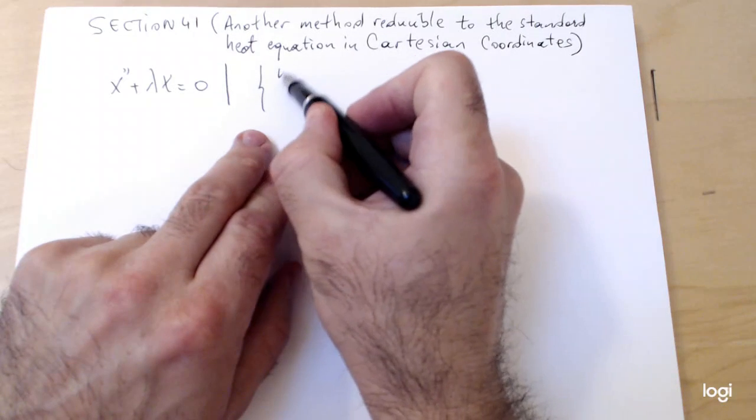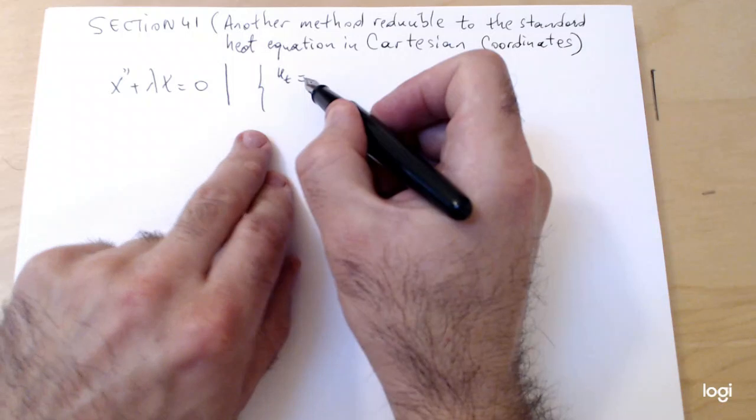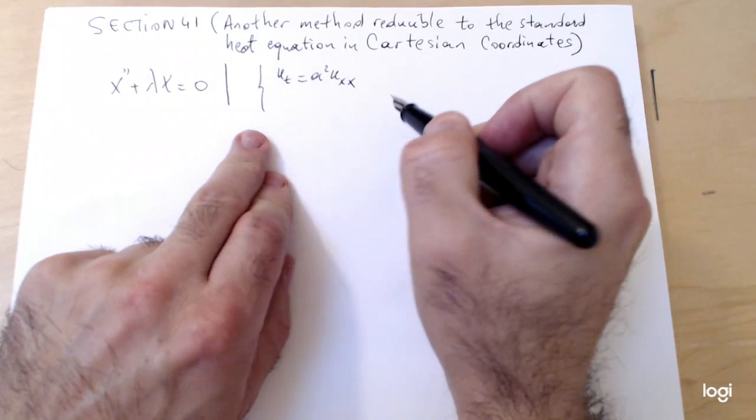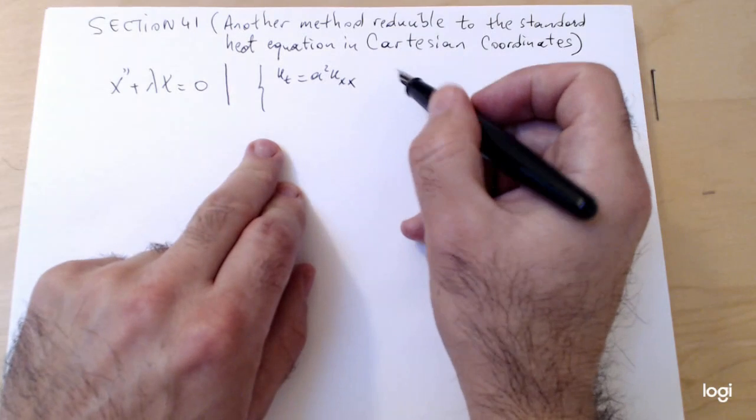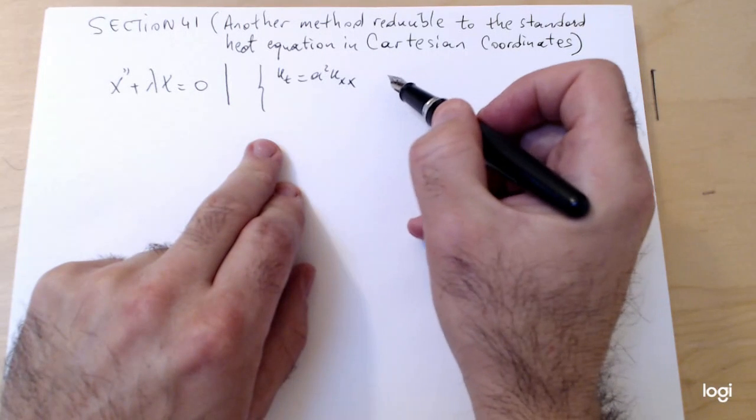If you have a heat equation in the standard form, let's say u partial t equals a squared u partial xx. Suppose this is a one-dimensional heat equation.